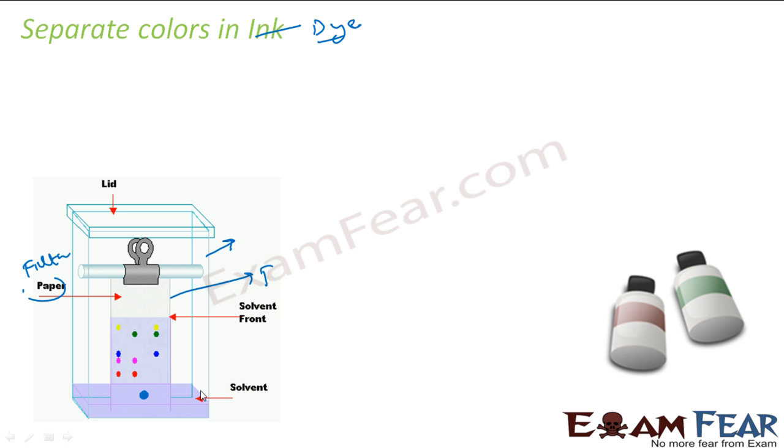And make sure that this dot will just touch the water here. You can use the water here as a solvent. So you understand, you take a filter paper, draw some lines. At this point, put some ink or dye. And then put this in this container, hang it properly. And make sure that only till this point, it is dissolved in water. And keep it for some time.